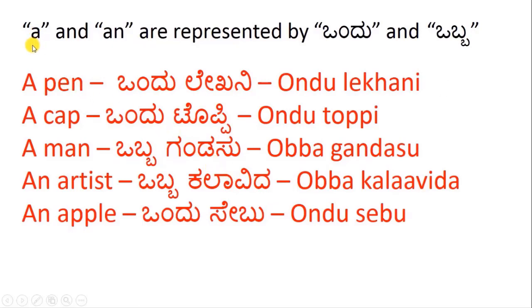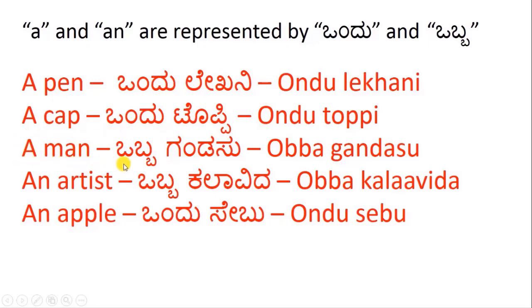Next, 'a' and 'an' are represented by 'ondu' and 'wabba' in Kannada. Examples: 'A pen' — Ondu lekhani. Lekhani is pen. 'A cap' — Ondu toppi. Toppi is cap. Ondu is 'a.' 'A man' — Wabba gandasu. Wabba is 'a/an,' gandasu is man.